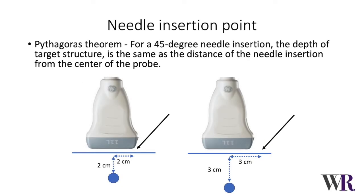Choosing an appropriate needle insertion point is paramount for needle visibility. Typically the insertion point chosen should be such that the angle of insertion is around 30 to 45 degrees. Using Pythagoras theorem, it can be inferred that for a shallower structure the needle insertion would need to be closer to the probe, but for a deeper structure the needle insertion may need to be a bit away from the probe.